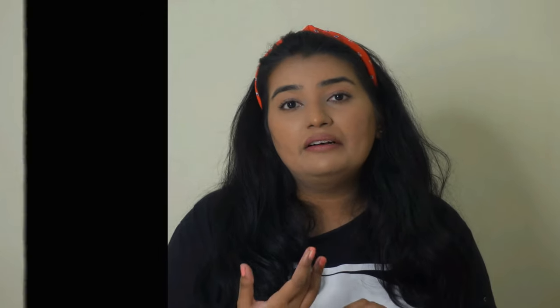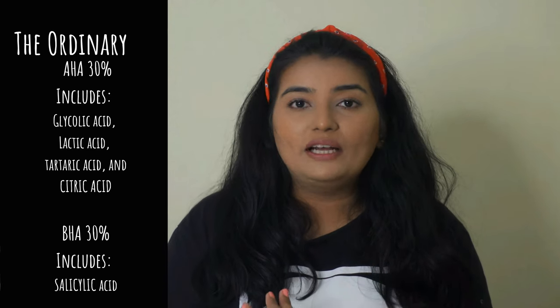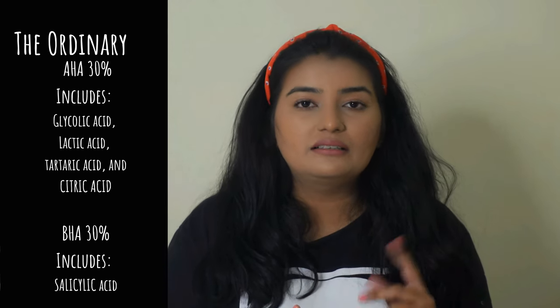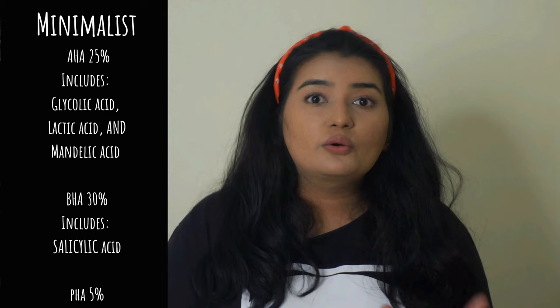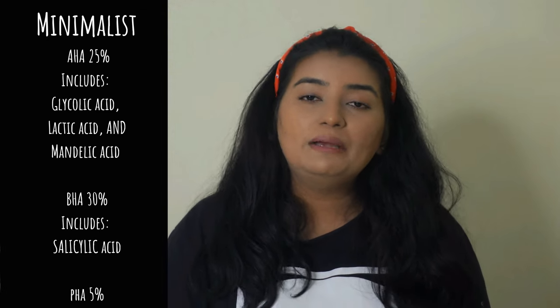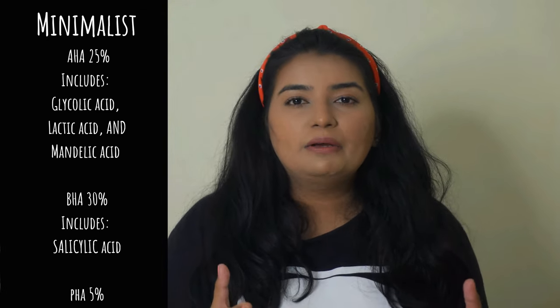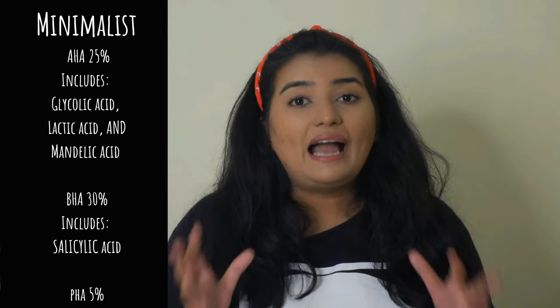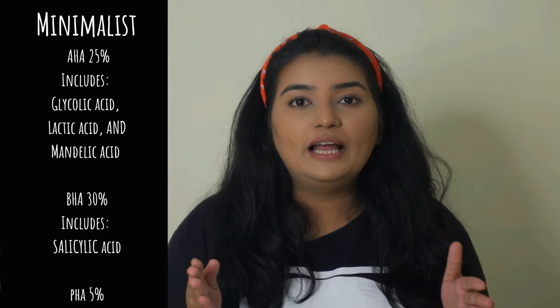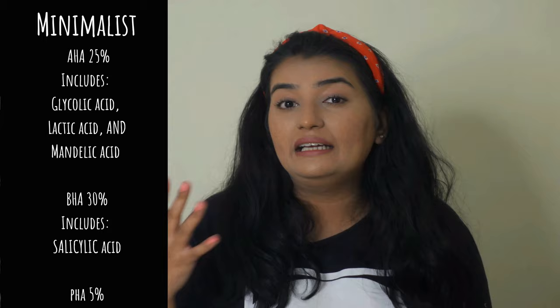Talking about the formulation of the products — they are very similar between both companies. In The Ordinary, there is 30% AHA, which uses glycolic acid, lactic acid, tartaric acid, and citric acid, plus 2% salicylic acid as the BHA. The Minimalist has used 25% AHA and 2% BHA, which is salicylic acid, and also 5% PHA. In their AHA blend, they have used glycolic, lactic, and mandelic acid, which is actually very useful for brown skin and suits it more than other acids.